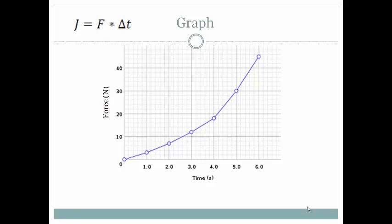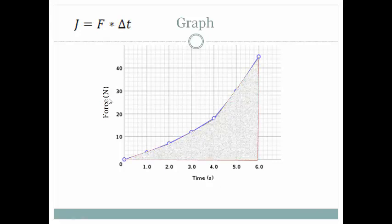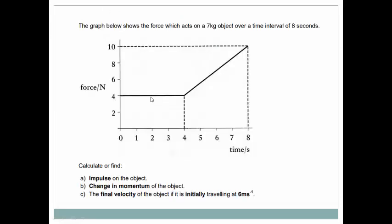To calculate impulse using a force-time graph, we can find the area under the graph, so we can get force multiplied by time, and hence we have the impulse. Here, let us take an example. The graph below shows...